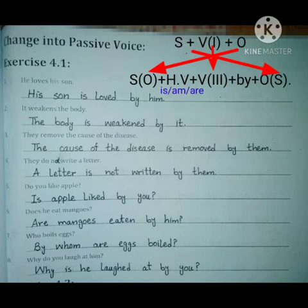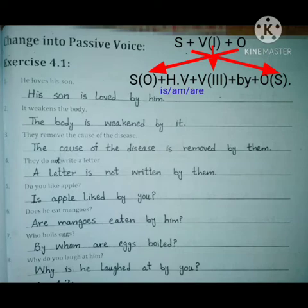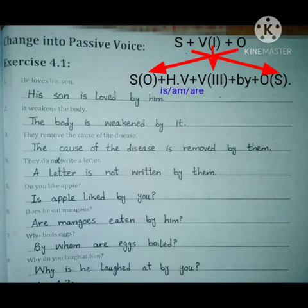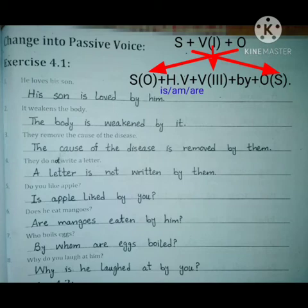Next: Do you like apple? This sentence is interrogative. First we identify the subject, verb, and object. The object is 'apple,' which comes to the start. 'You' is the subject and moves to the last; 'by' is placed before it. The third form of like is 'liked.' In interrogative sentences, the helping verb comes before the subject. Apple is singular, so the helping verb is 'is.' Result: Is apple liked by you?